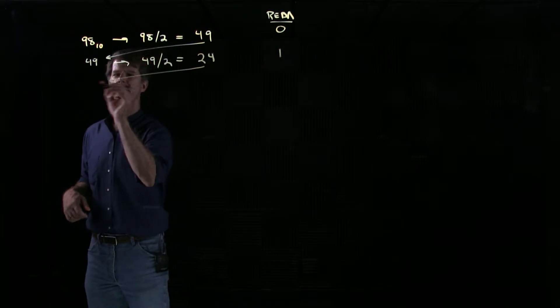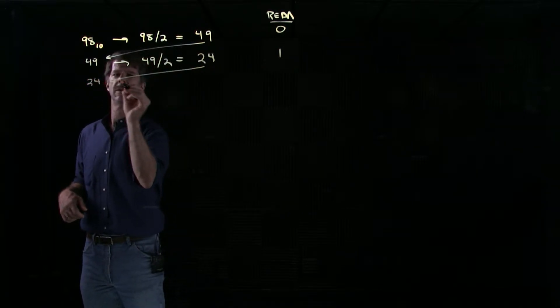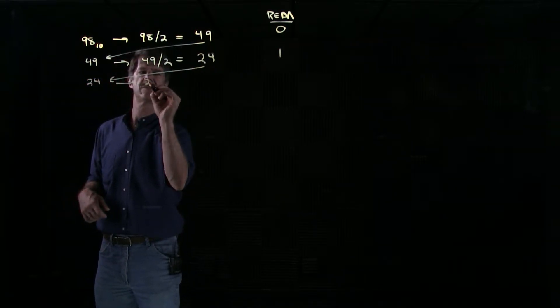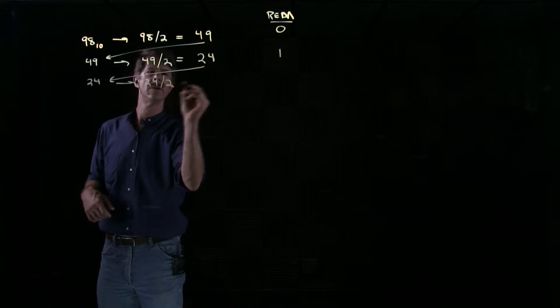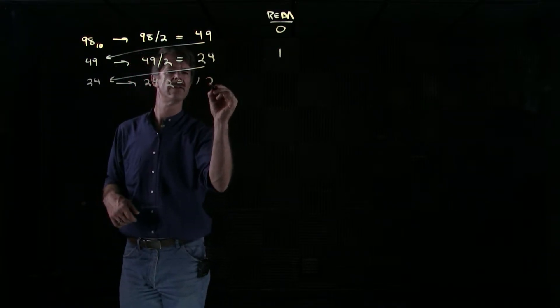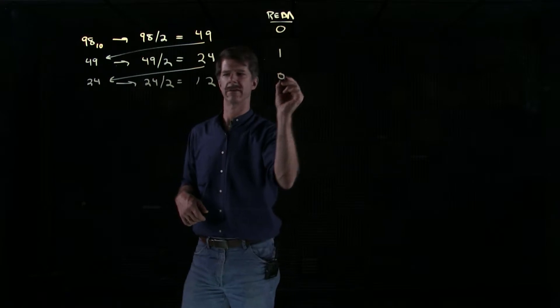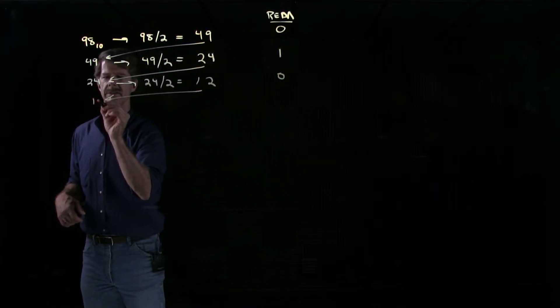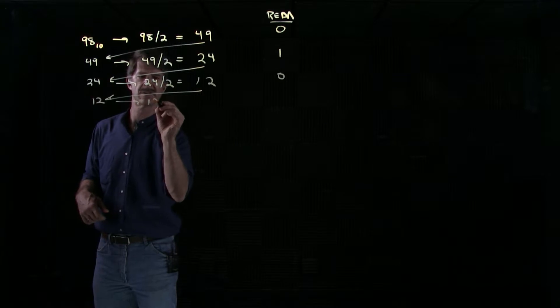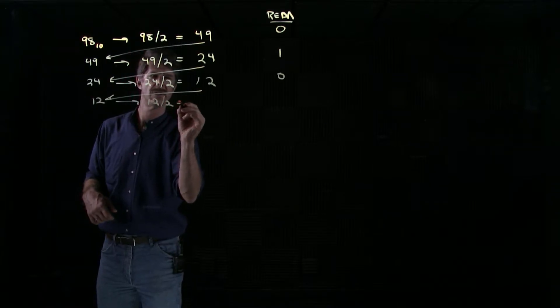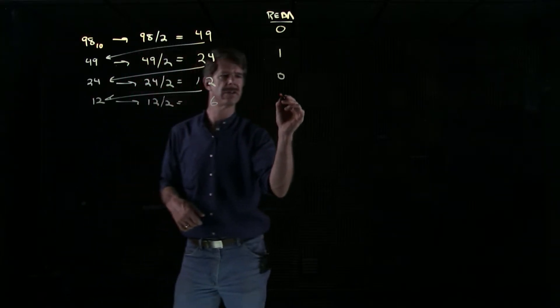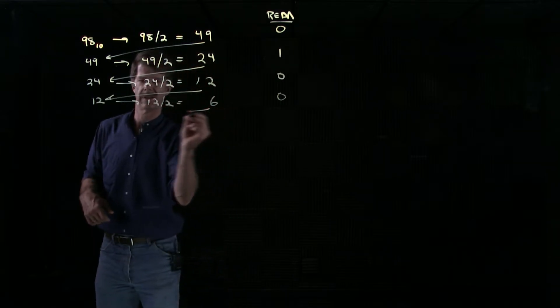Then we take 24, divide it by 2, we get 12 with a remainder of 0. We take the 12, divide it by 2, we get 6 with a remainder of 0.